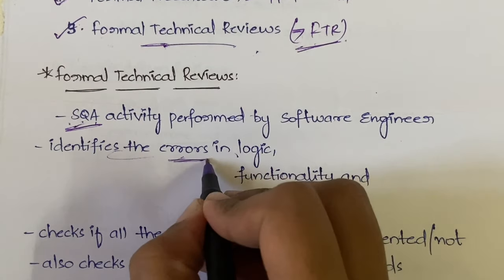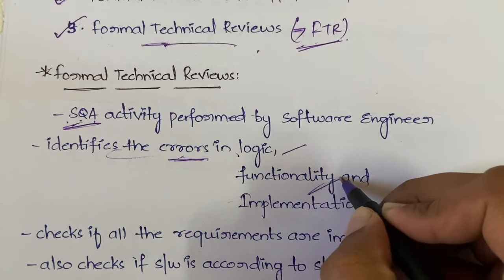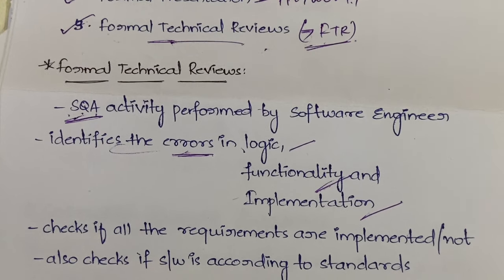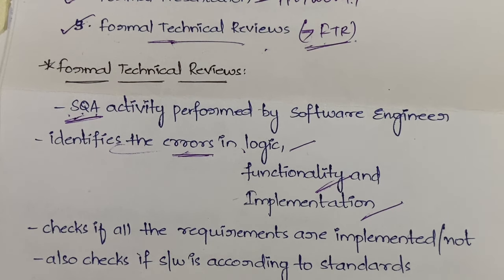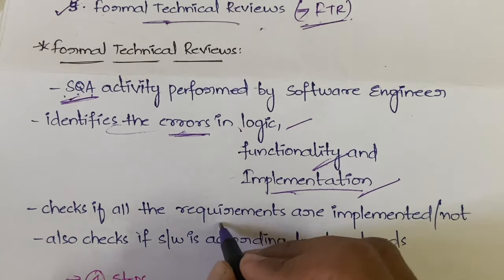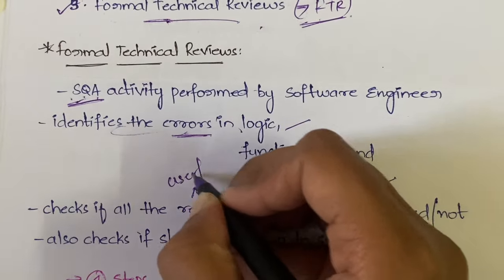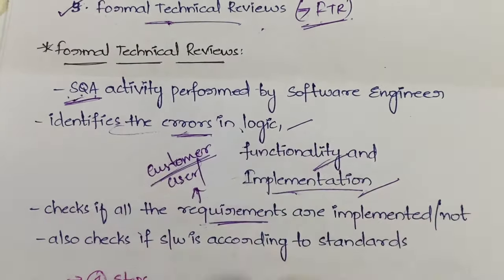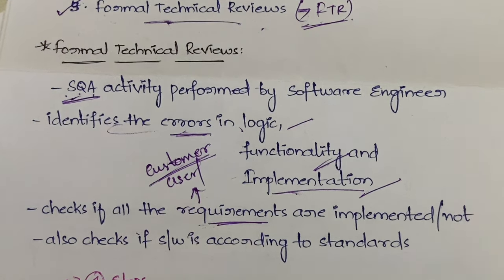FTR identifies errors in the logic of the application — whether all modules are logically connected and whether the logic written is correct. It checks the functionality — whether the software is serving the correct purpose. It also checks the implementation — after implementation, whether we are getting any errors or bugs. Additionally, it checks if all the requirements given by the customer are implemented or not.